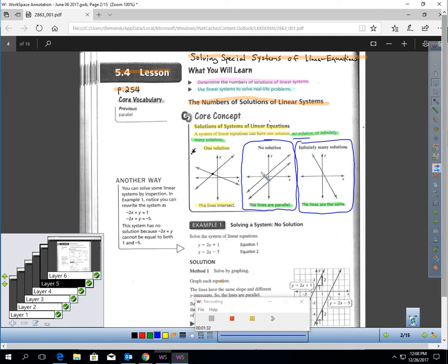We're not necessarily learning a bunch of new stuff today, but what we are learning is that when you solve a system, it's not always going to work out to one nice ordered pair solution. It could have no solution or it could have infinitely many. We're going to really study these two cases specifically more in this lesson.